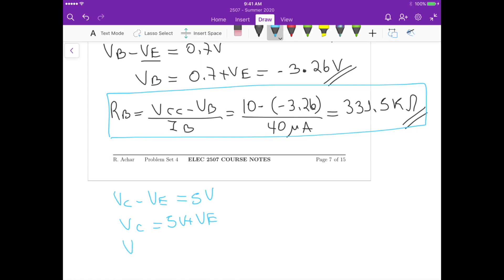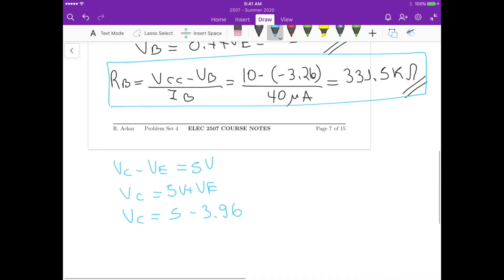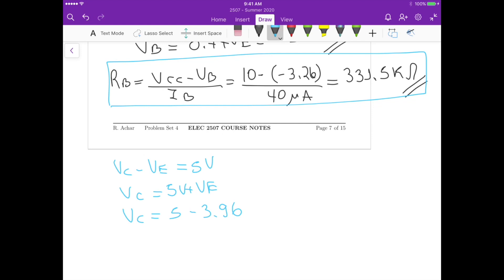Which in our case is just 5 plus VE, which is VE in our case, how much is it? So it's minus 3.96. And this gives us a VC that is 1.04 volts. So that's the value of VC.